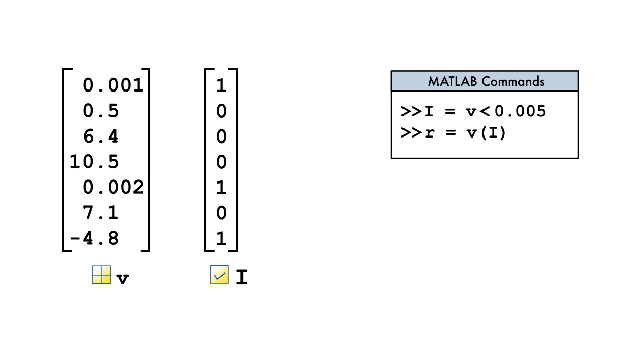In certain situations, instead of extracting the elements satisfying the criterion, we want to modify those elements in place. Let us now look at how we can modify the elements of v that were less than the threshold value of 0.005.